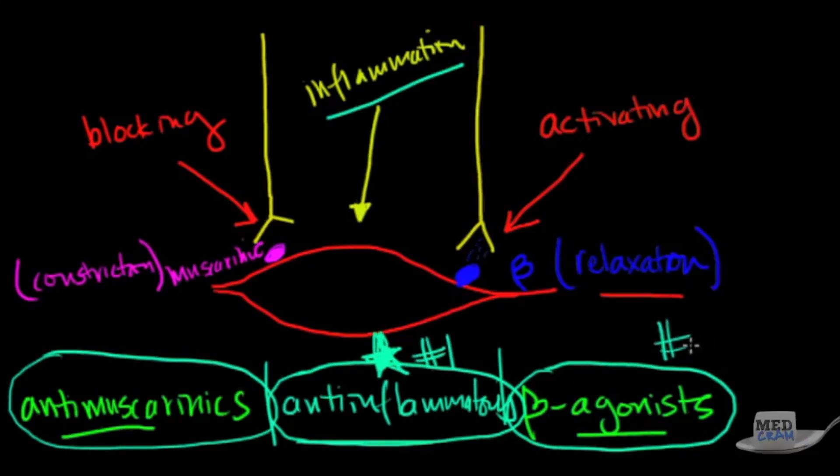Some of them are going to be used first because they're much more effective than others. You could probably guess which one is going to be most effective because inflammation is starting everything off. The anti-inflammatories are going to be number one. The beta agonists are going to be number two. And the anti-muscarinics are going to be number three. So we'll get into the pharmacology of that.